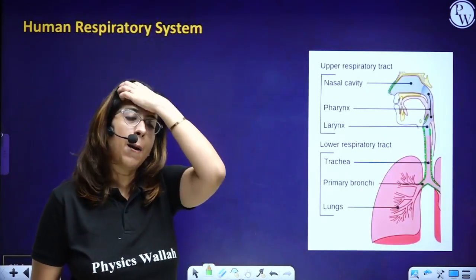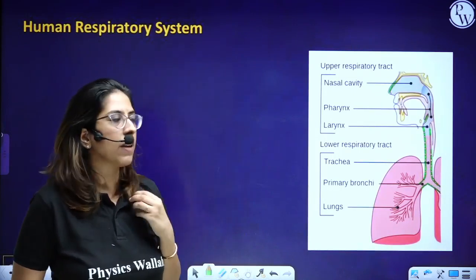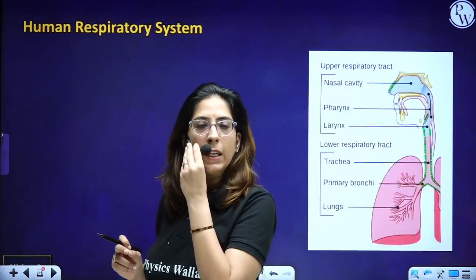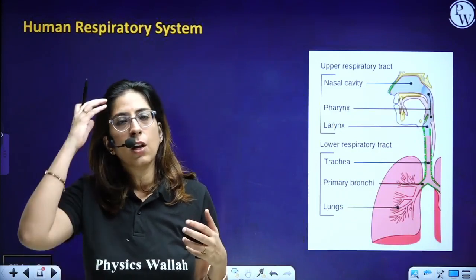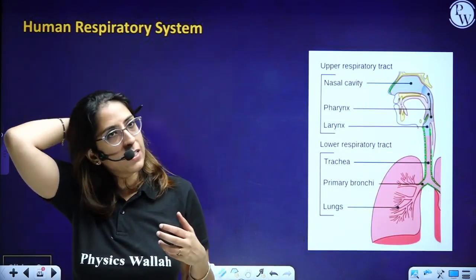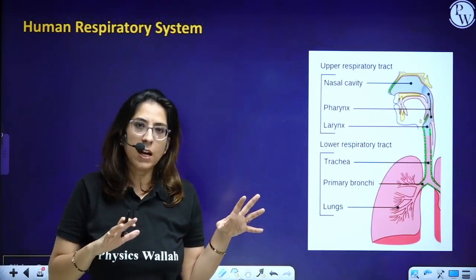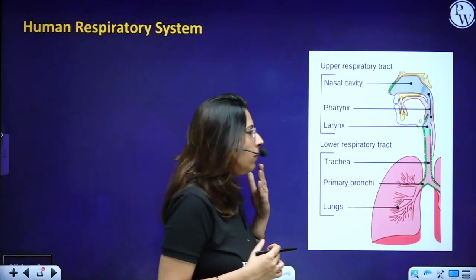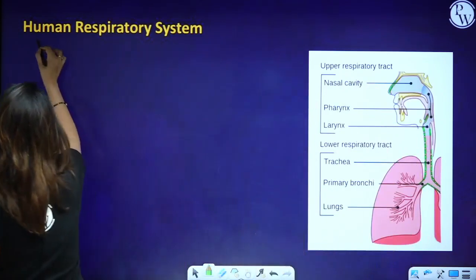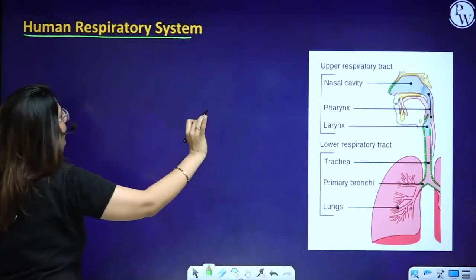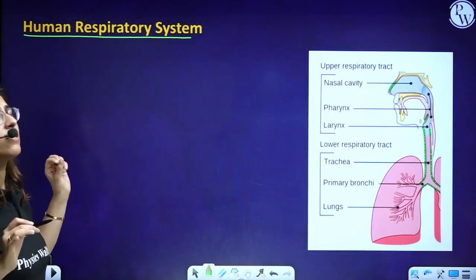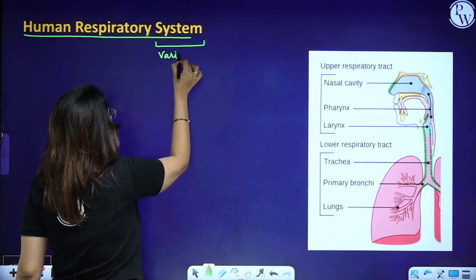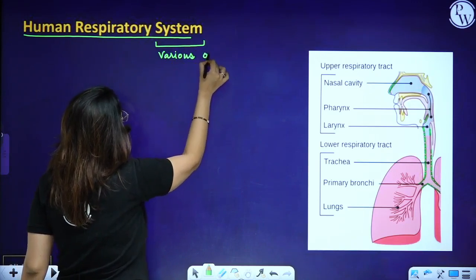Majorly in this chapter, we have to discuss breathing and exchange of gases under the unit animal physiology — specifically human physiology. So we will be discussing the human respiratory system. The human respiratory system is not a simple system; various structures and organs are present that function together to help in gaseous exchange.